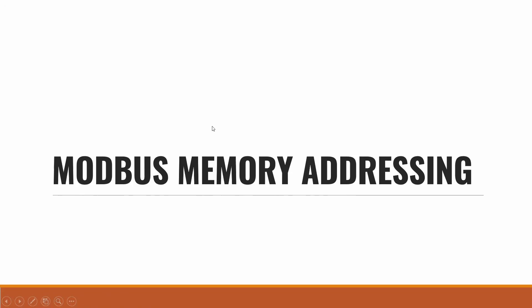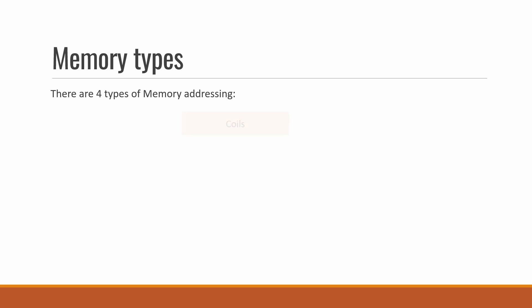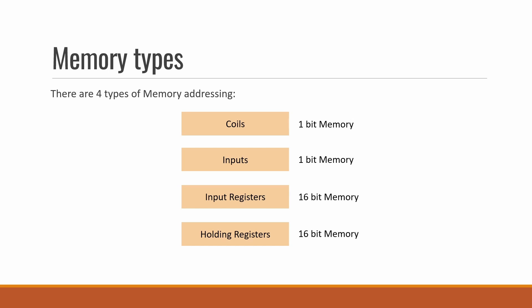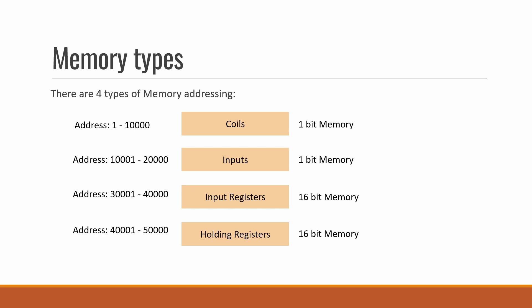Next we will discuss Modbus memory addressing. There are four data types or memory types available in Modbus: coils, inputs, input registers, and holding registers. Coils and inputs are 1-bit memory, while input registers and holding registers are 16-bit memory. The address for coils ranges from 1 to 10,000; inputs from 10,001 to 20,000; input registers from 30,001 to 40,000; and holding registers from 40,001 to 50,000. Coils are used for discrete output, inputs for discrete input, input registers for analog inputs, and holding registers for analog outputs.